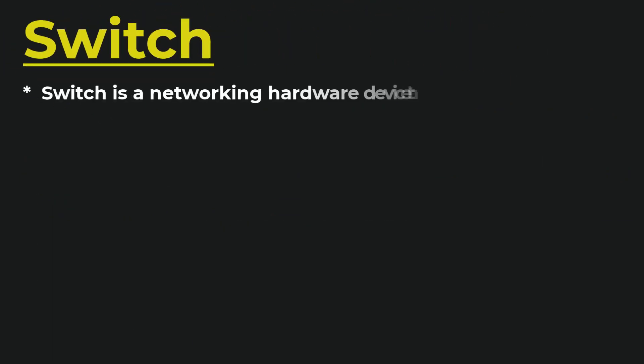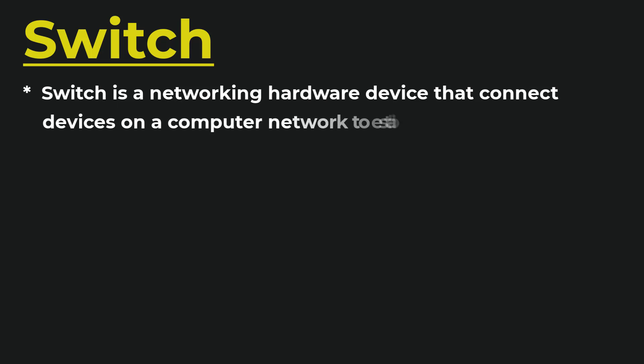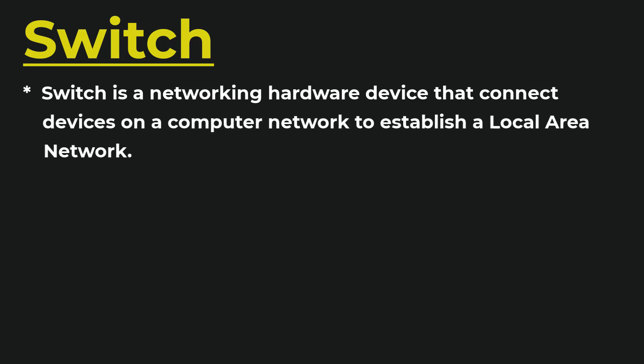First, let's see what a switch is. A switch is a networking hardware device that connects devices on a computer network to establish a local area network. As we know, a hub is also a network hardware device used to set up a local area network, and a switch does the same — so what is the difference between a hub and a switch?